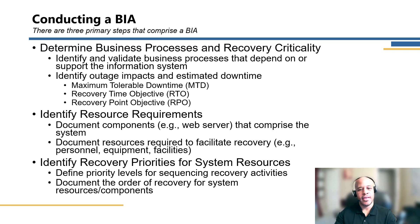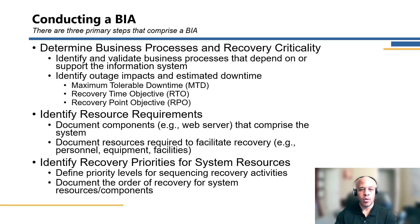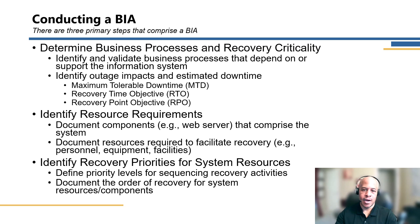When conducting the BIA, there are three key steps. The first is to determine the business process and recovery criticality — understand the business process a specific system supports and what the need for recovery will be. Key items here include the maximum tolerable downtime, or MTD, which is how long the system can actually be down before it causes a material impact to the business. Then there's the recovery time objective — how long the system can be down before it needs to be recovered — and the recovery point objective, which is how much data can be lost before it becomes a significant impact to the organization.